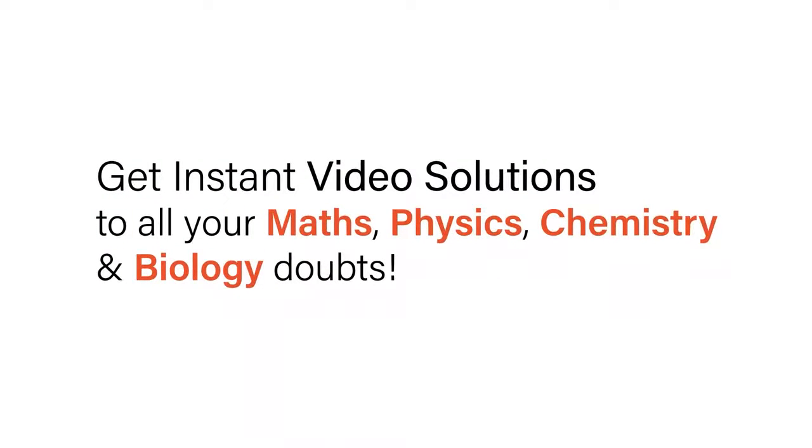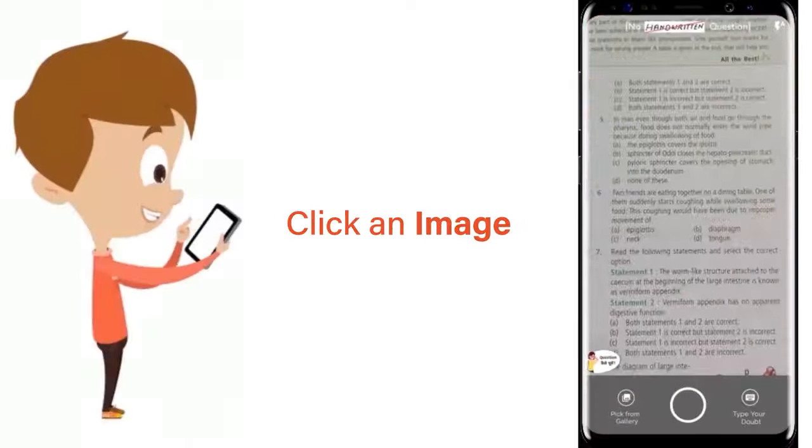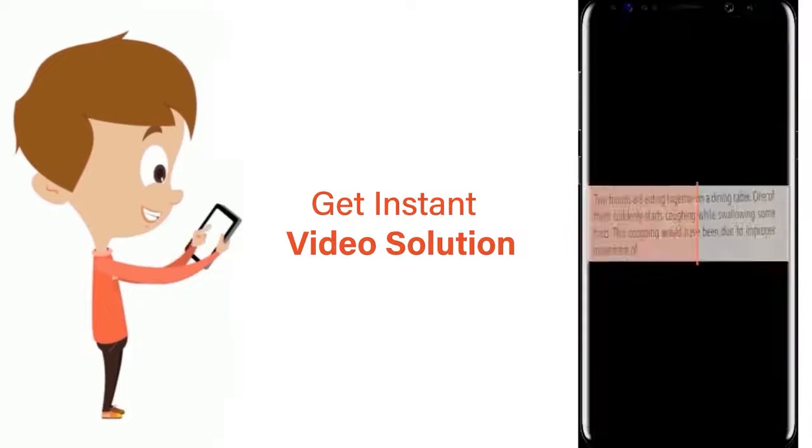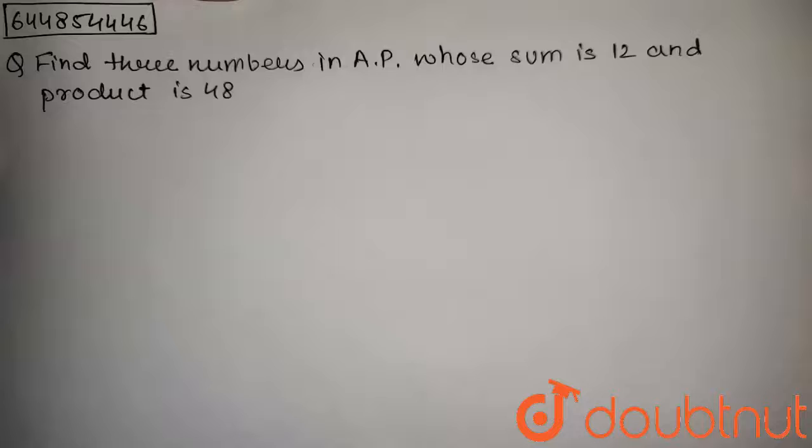With Doubtnet, get instant video solutions to all your maths, physics, chemistry, and biology doubts. Just click the image of the question, crop the question, and get instant video solution. Download Doubtnet app today. The question is: find three numbers in AP whose sum is 12 and product is 48.